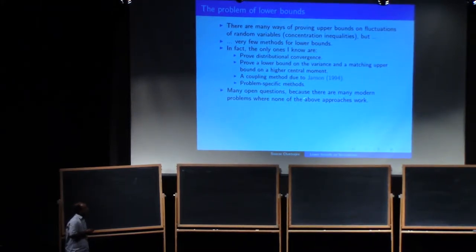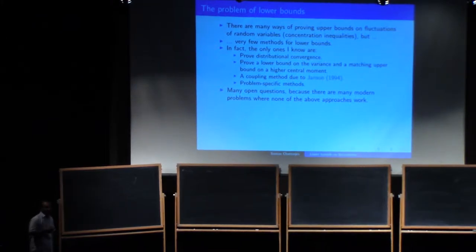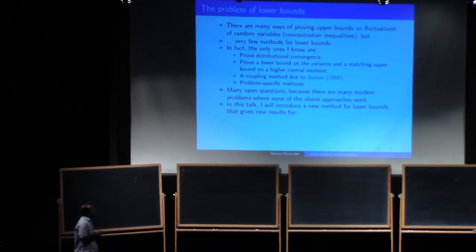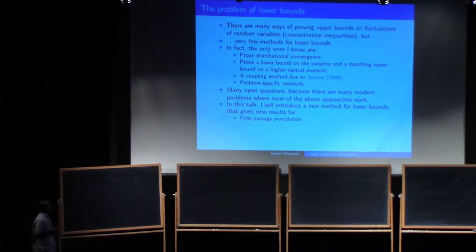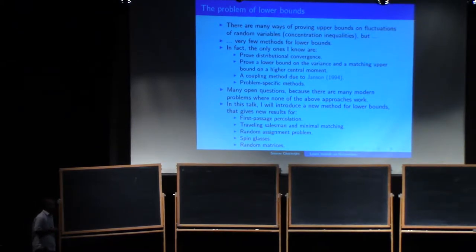As I was thinking about the question that Yuval asked me, I realized there are many other open questions — that's not the only one — and there are many modern problems where none of these methods work. So I tried various things; they didn't work. I'll tell you about a new method with applications to first passage percolation, traveling salesman and minimum matching, the random assignment problem, some spin glasses, and a little bit of application to random matrices.